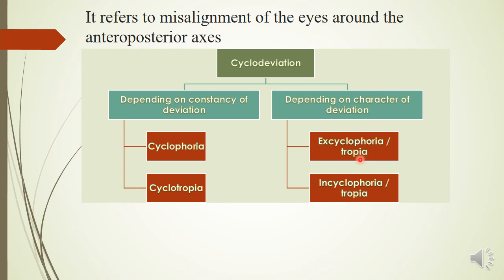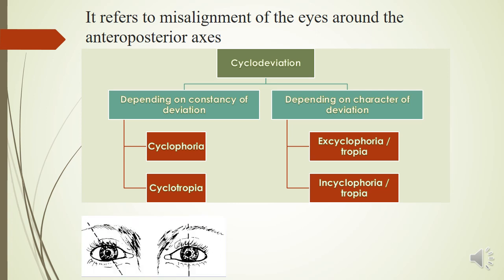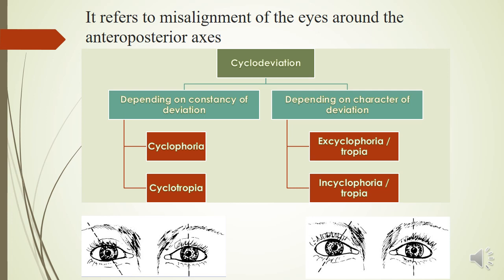The term x-cyclophoria or x-cyclotropia means the 12 o'clock position of the cornea will rotate temporally — outward from the primary position — whereas in-cyclotropia means the inward rotation of the eye. This first example shows x-cyclotropia and the second example shows in-cyclotropia.